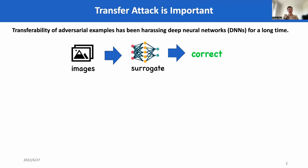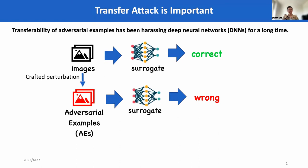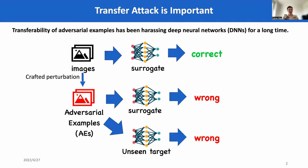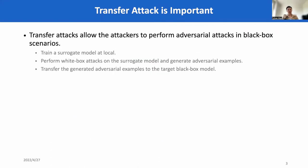Transfer attacks have been harassing deep neural networks for a long time. The attacker needs to prepare a surrogate model on the seed images and perform a white-box attack on a surrogate model to get adversarial examples that can deceive the surrogate model. They hope that the adversarial examples are able to transfer to the unseen targets so that these unseen targets are deceived as well. Therefore, transfer attacks allow the attackers to perform adversarial attacks in black-box scenarios.